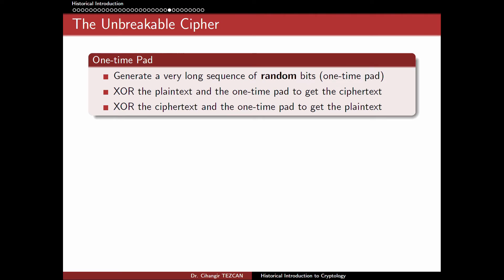Assume that we have somehow mapped every letter to some bits, so they are zeros and ones. Encryption works as follows: you write your plaintext in zeros and ones, and you XOR the plaintext with the one-time pad to get the ciphertext. The person who wants to decrypt the ciphertext XORs the one-time pad with the ciphertext and gets the plaintext.